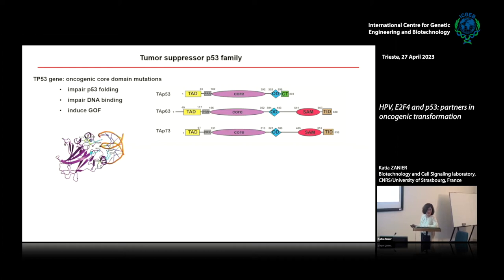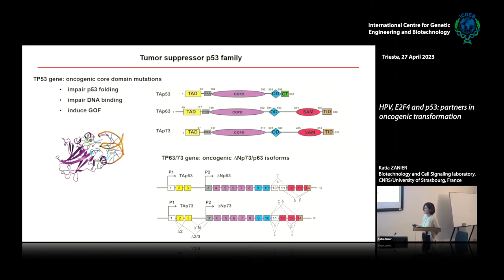So the core domain is not only a DNA binding domain but also a protein-protein interaction domain. The TP63 and TP73 genes encoding p63 and p73 are rarely mutated in cancer, but they can be expressed as oncogenic isoforms — the ΔNp73 and ΔNp63 isoforms — due to transcription from an internal P2 promoter, which is present in both genes. Transcription from the P2 promoter gives rise to these delta-N isoforms, which are truncated versions of the full-length proteins we call TAp53, TAp63, TAp73.